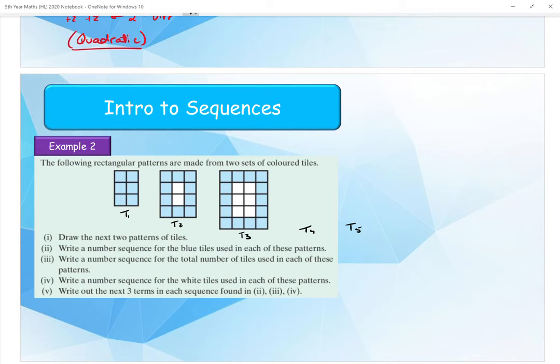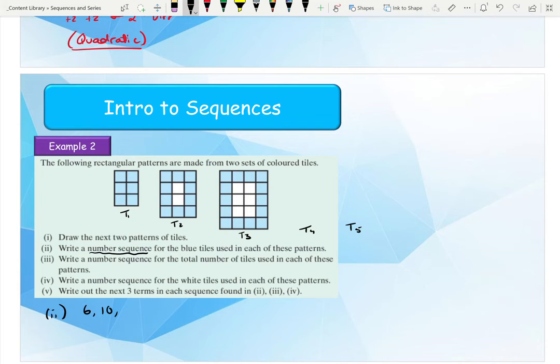So part 2 here, what it looks at is using a number sequence for the blue tiles used in each of these patterns, which just means we write down the number. So we have 6, then 10, then 14. And what you'd see in the next one when you count them is you have 18, and I can guess in the next one already that you're going to have 22.